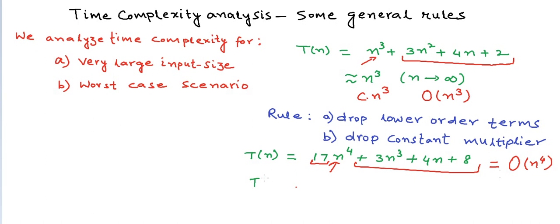We may also sometimes encounter time expressions like T(n) = 16n + log(n). For higher values of n, log(n) will become insignificant, and this will be equal to Big O of n. So you just ignore the lower order term — log(n) is insignificant in comparison to n — and we drop the constant 16.